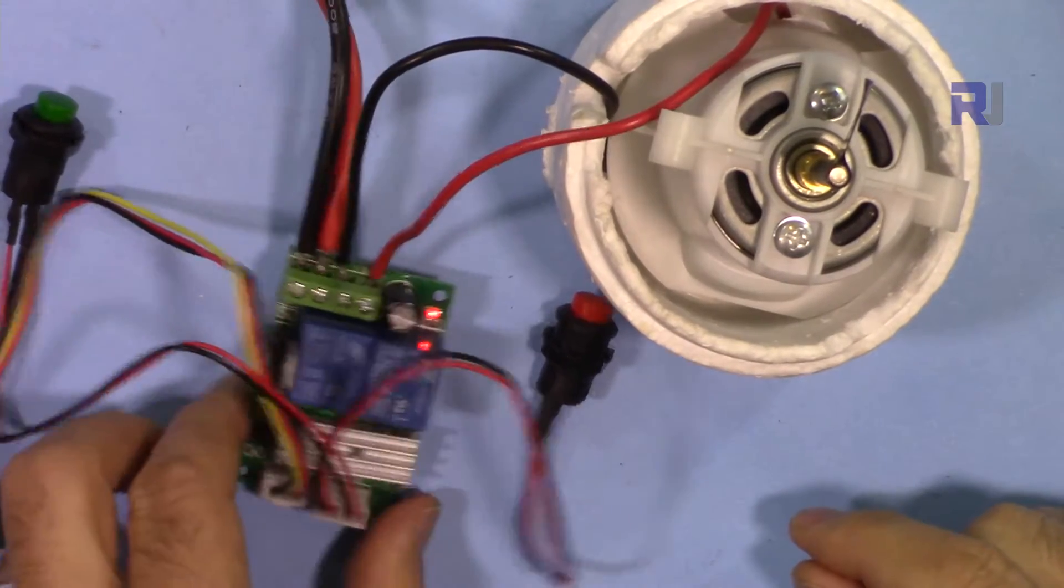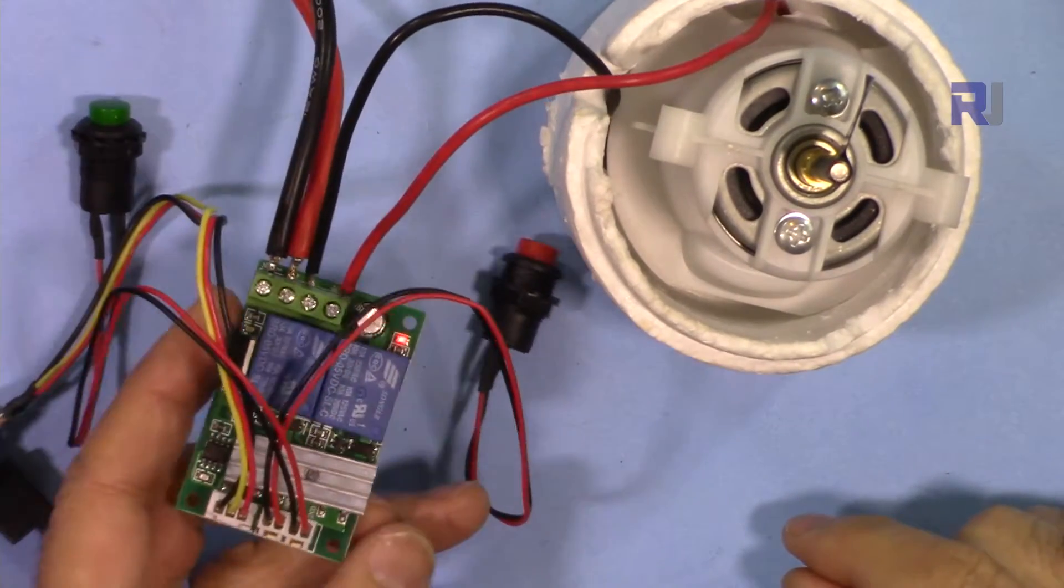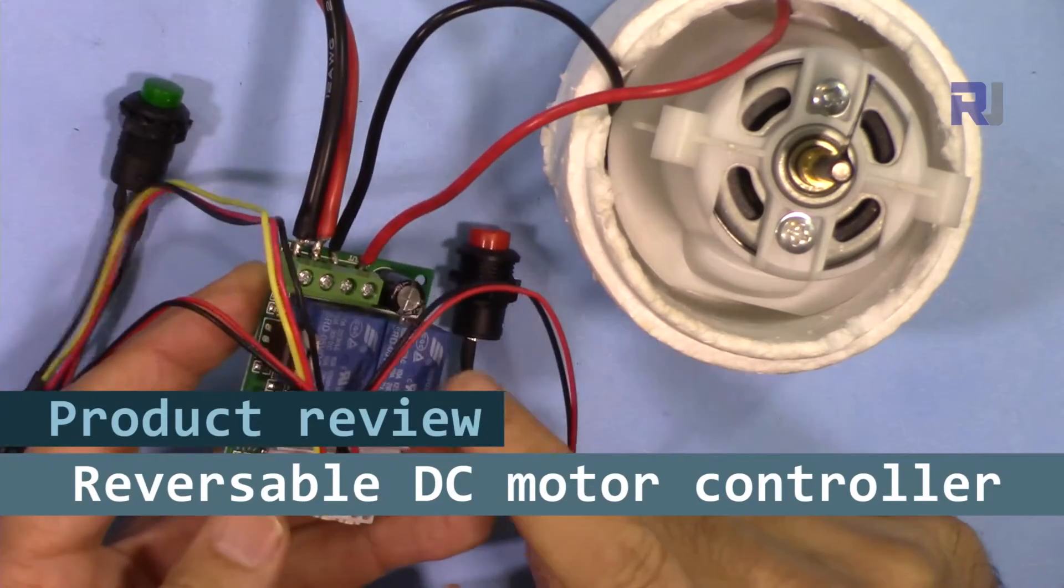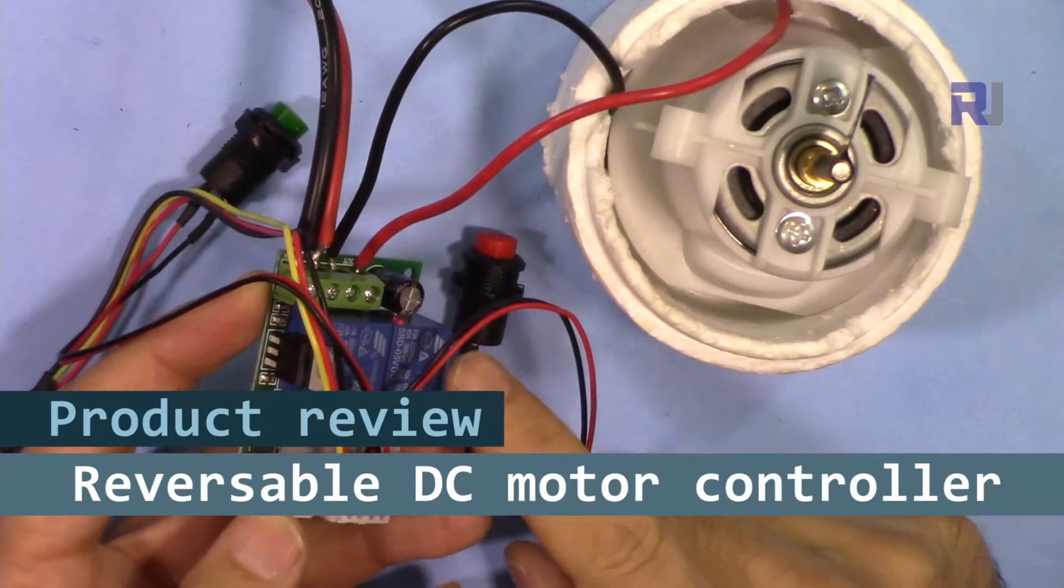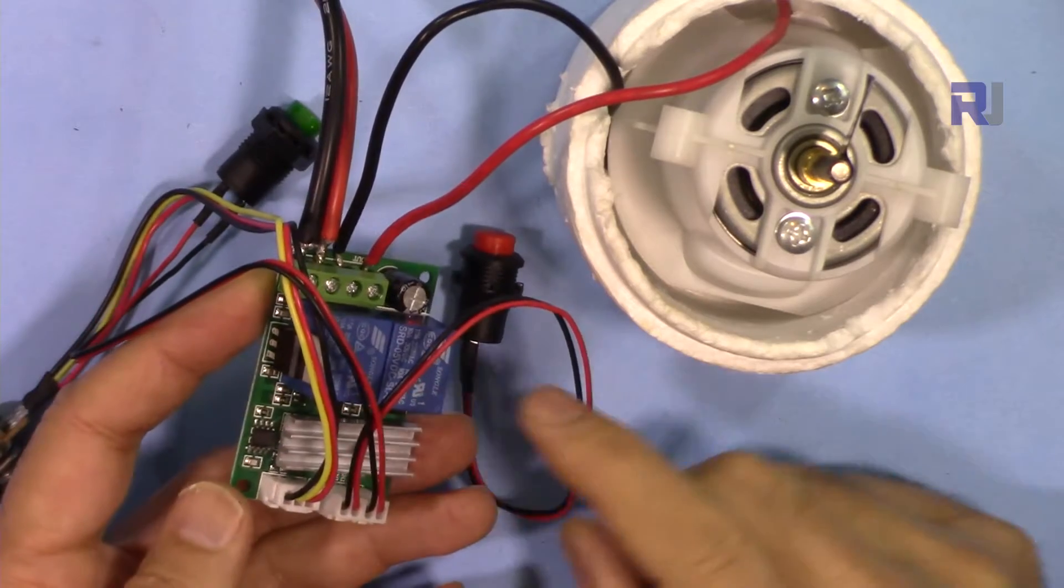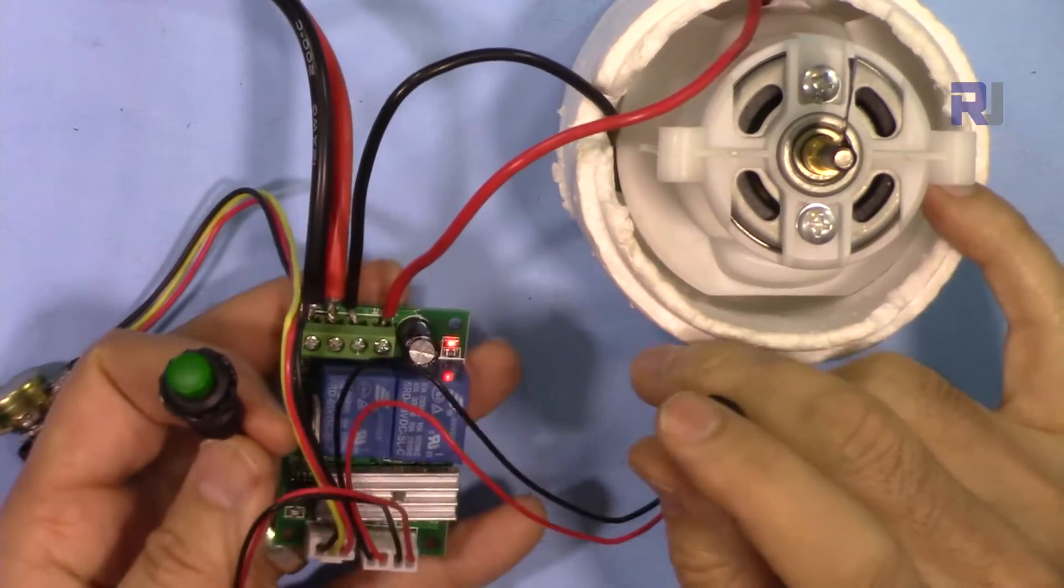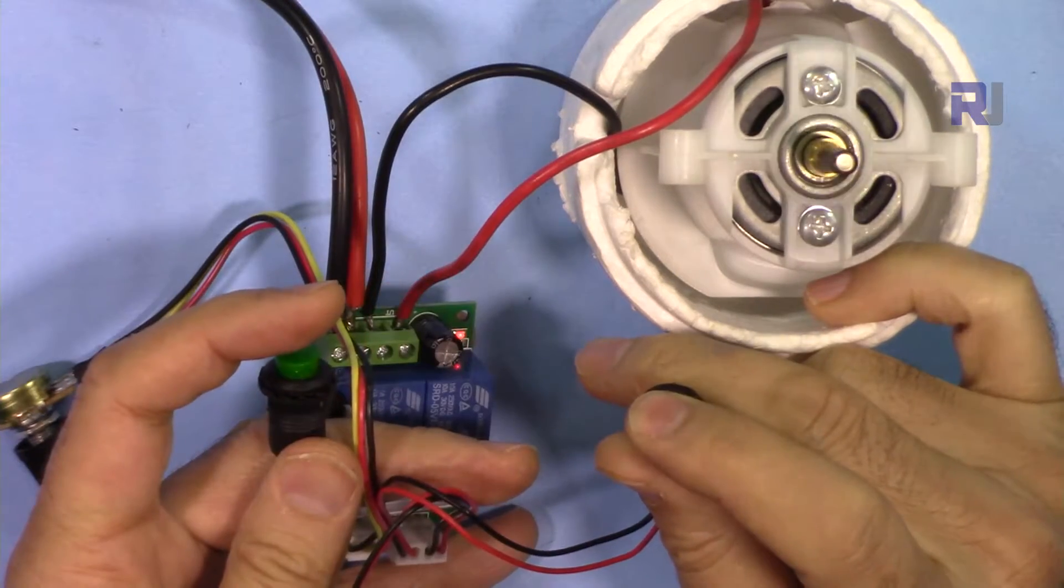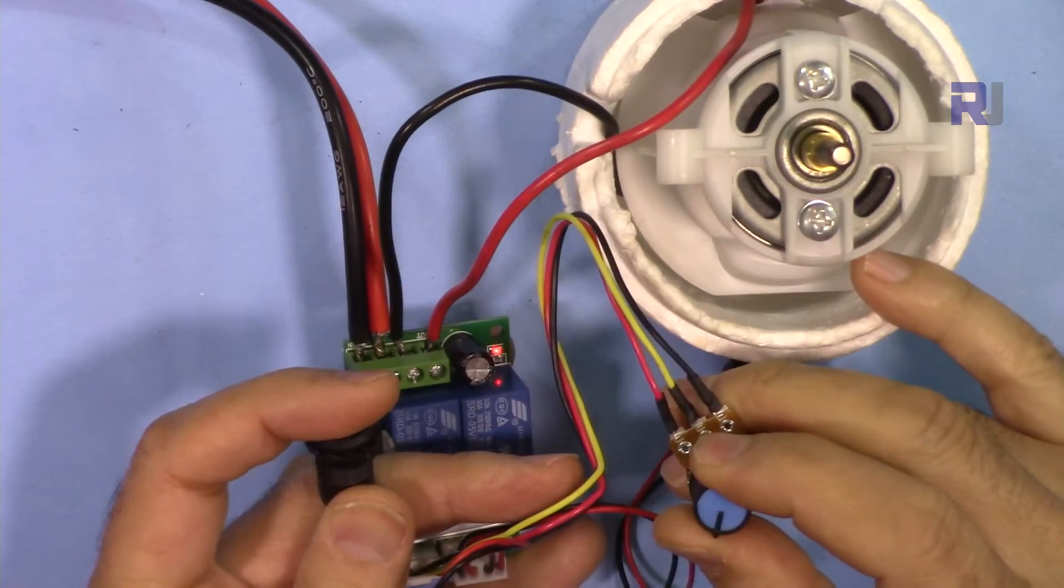Hi, welcome to a product test and review by Robojax. In this video we're going to test and see how this reversible 10 ampere, 30 volt motor controller module works. We're going to see how this can control the direction and speed of this motor.